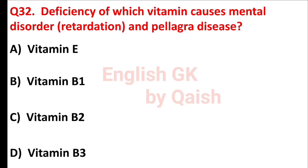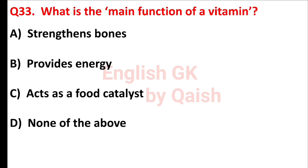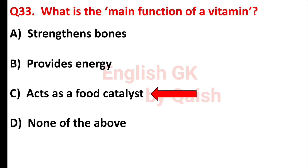Deficiency of which vitamin causes mental disorder and pellagra disease? Answer is option D, vitamin B3. What is the main function of a vitamin? Answer is option C, acts as a food catalyst.